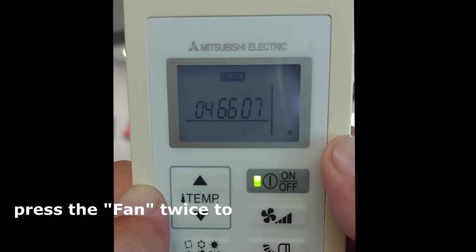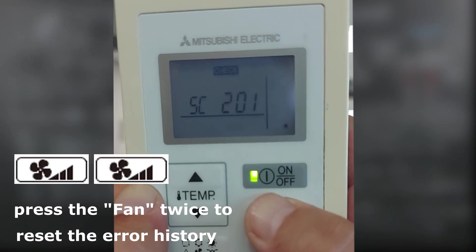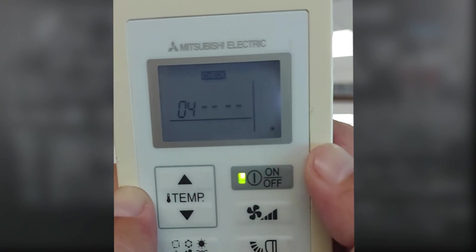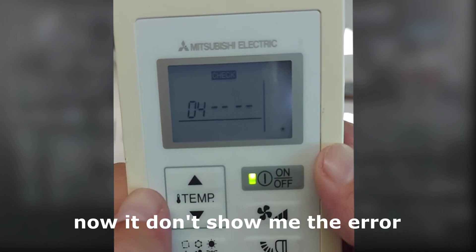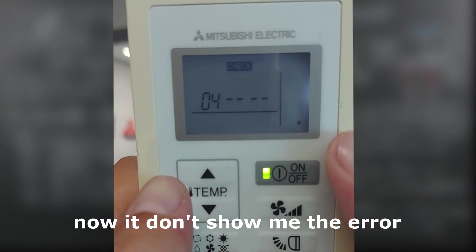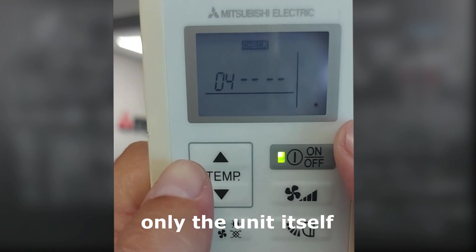Press the fan twice to reset the error history. Now it doesn't show me the error, only the unit itself.